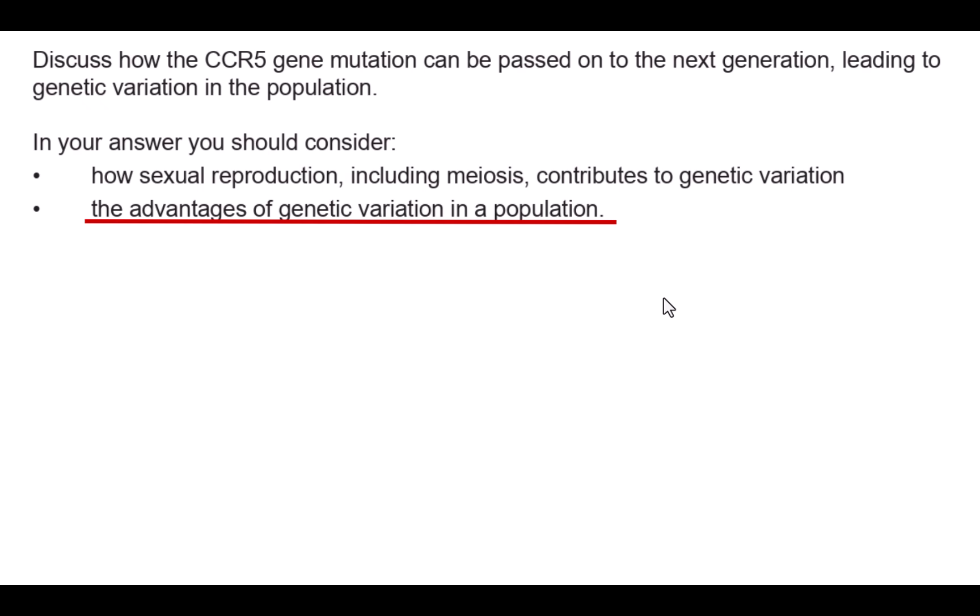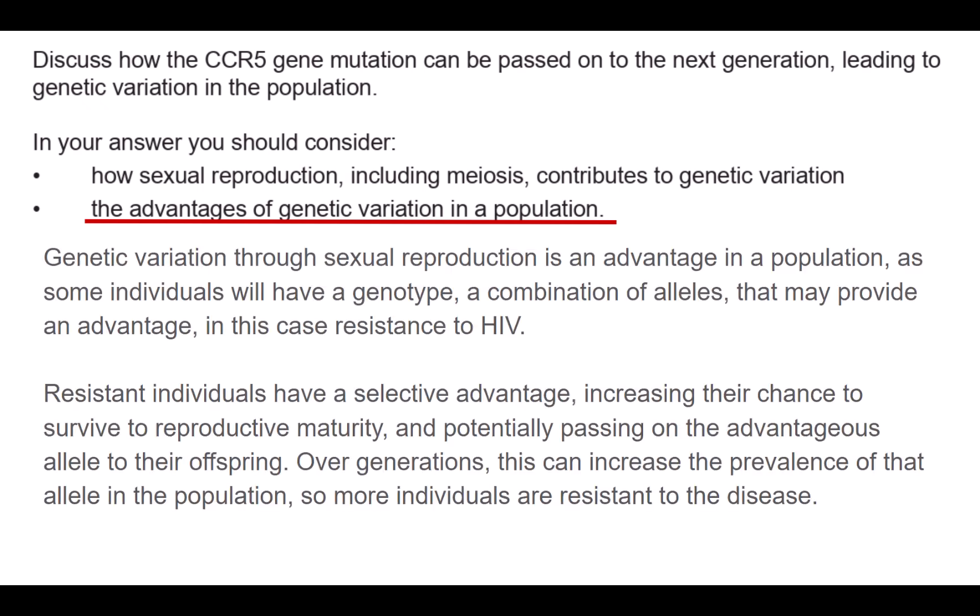The second bullet point is a concept you really need to be ready to talk about in your exam — towards the excellence level — and that's the advantages of genetic variation in a population. The standard doesn't expect you to identify certain mutations as good or bad, but you should be able to discuss the implications of genetic variation. Genetic variation through sexual reproduction is an advantage as some individuals will have a genotype — a combination of alleles — that may provide an advantage, in this case resistance to HIV. Resistant individuals have a selective advantage, increasing their chance to survive to reproductive maturity and potentially passing on the advantageous alleles. Over multiple generations, this can increase the prevalence of that allele in the population, so more individuals become resistant to the disease.